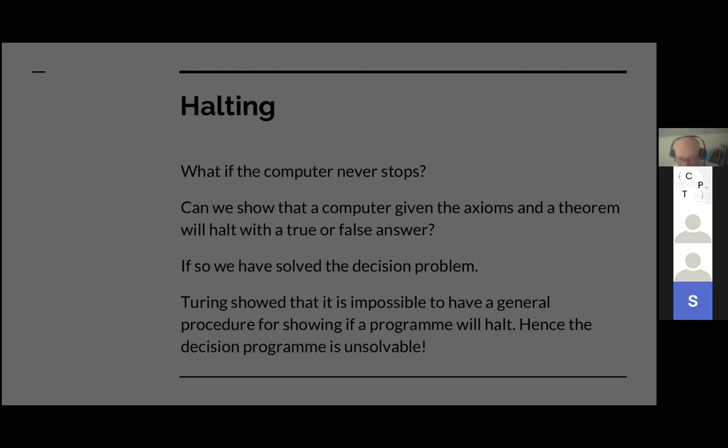Because there's always the possibility that the computer will never stop. It may go around into infinite loops. And we want to say, can we show that a computer, given the axioms and the theorem, will halt with a true or false answer. So this is one level up from applying the axioms to the theorem. We're making a meta statement about can we show that the whole computer, given the axioms and the theorem, will halt with a true or false answer, because if we can show that it will halt with a true or false answer for any set of axioms, then Hilbert's conjecture would have been proven. What Turing showed was that it's impossible to have a general procedure for showing if another program will halt. You can't have one program which will prove whether or not a second program will halt in all circumstances.